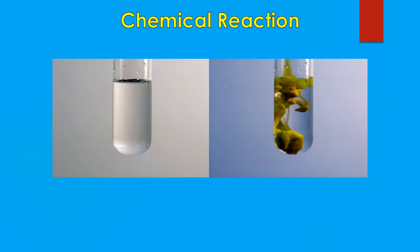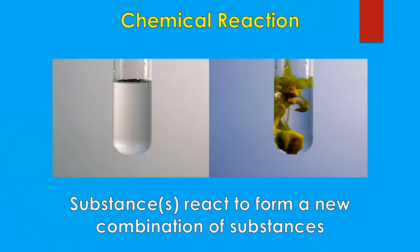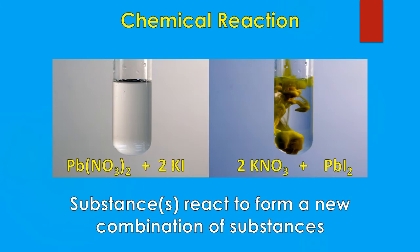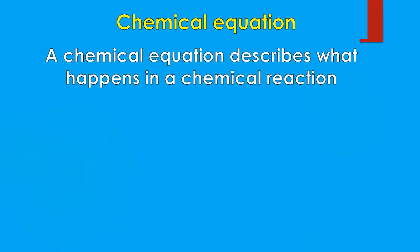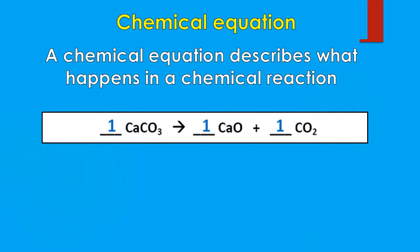So we start with a chemical reaction — what is a chemical reaction? A chemical reaction basically occurs when substances react to form new combination of substances. So we start with one set of substances and then we get different substances at the end. This is an example of a reaction occurring. It gives us the chemical equation for what occurred, telling us what substances we start with and what substances we end with. So a chemical equation basically describes what happens in the chemical reaction — it tells us what we start with and what we end with.